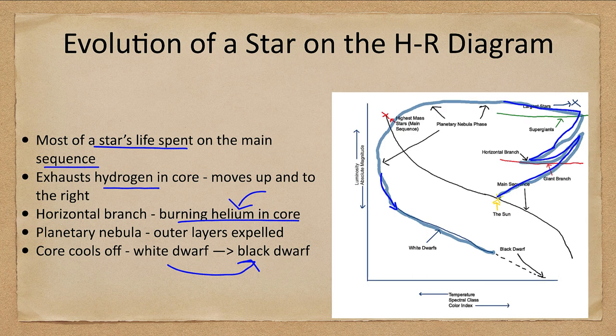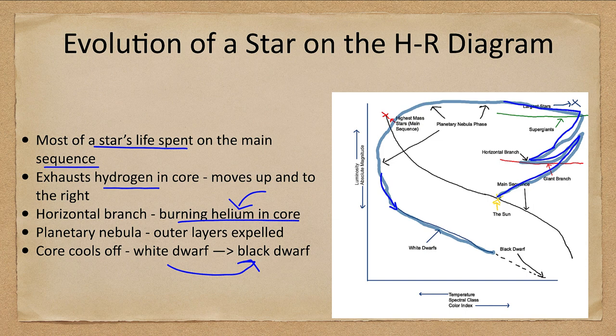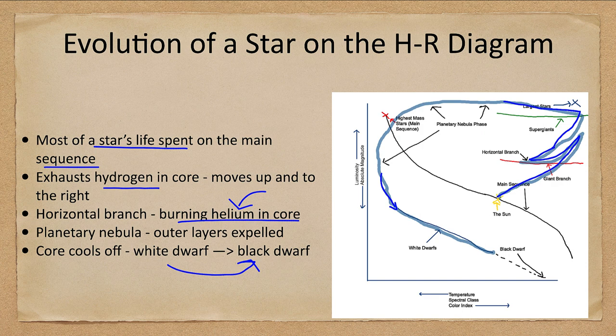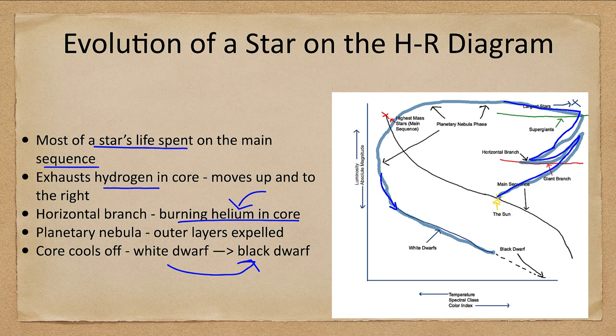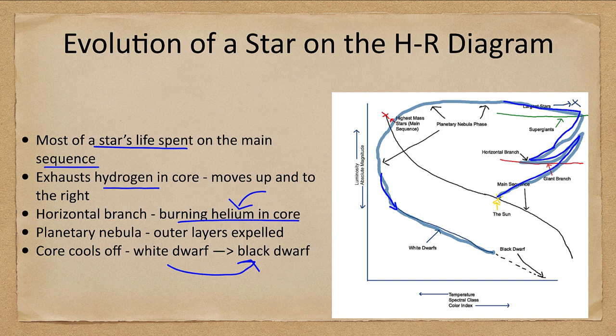Now a black dwarf is the eventual end state of the vast majority of stars. However, because of the amount of time it takes a white dwarf to cool, there are no black dwarfs that have yet had time to form. There has not been sufficient time in the history of the universe to yet make one of these stars. However, trillions of years from now, they will be the vast majority of objects within the universe.